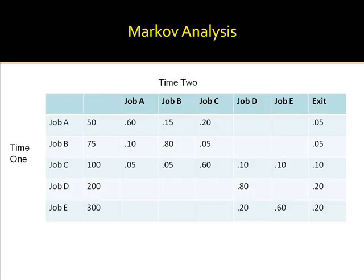This matrix has five job states at time 1 and six at time 2, because there is the possibility that an individual will leave the organization. If we look at the cell of the matrix at the intersection between job A and job A, we see that the entry there is .6. This indicates that there is a 60% probability that an individual in job A at time 1 will remain in job A at time 2. Moving across the table to the right, we find a .15, indicating a 15% probability that an individual in job A at time 1 will be in job B at time 2.